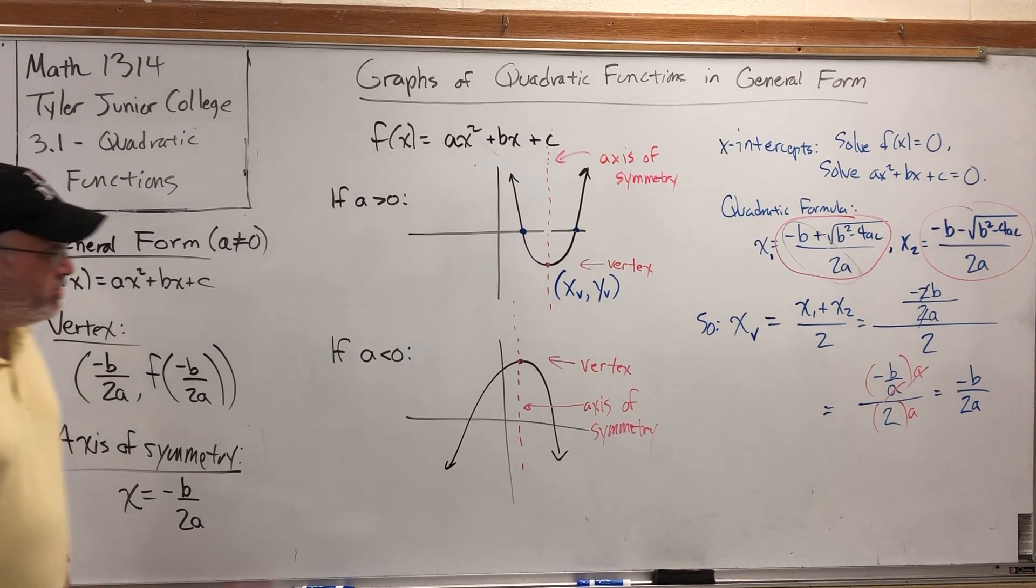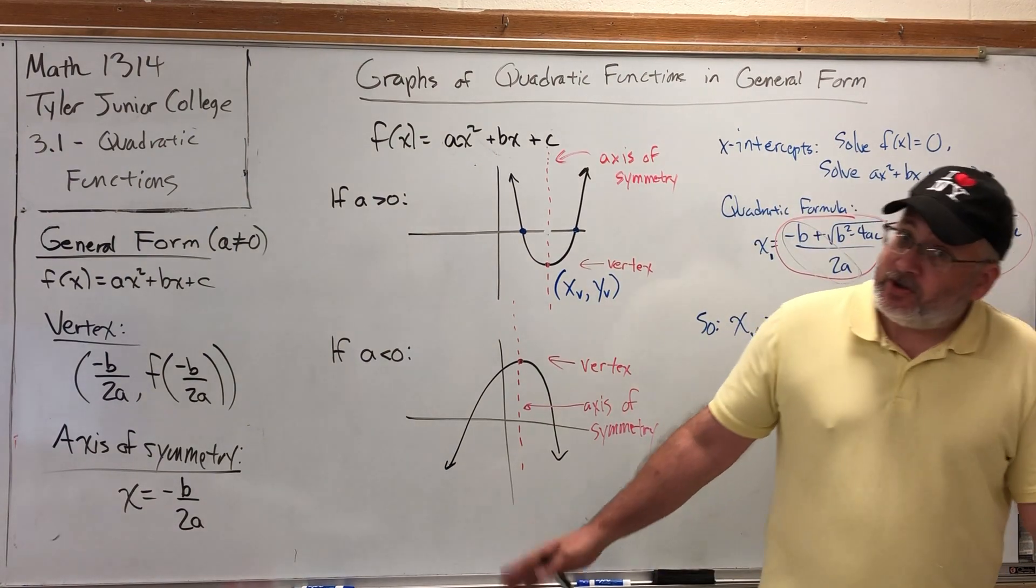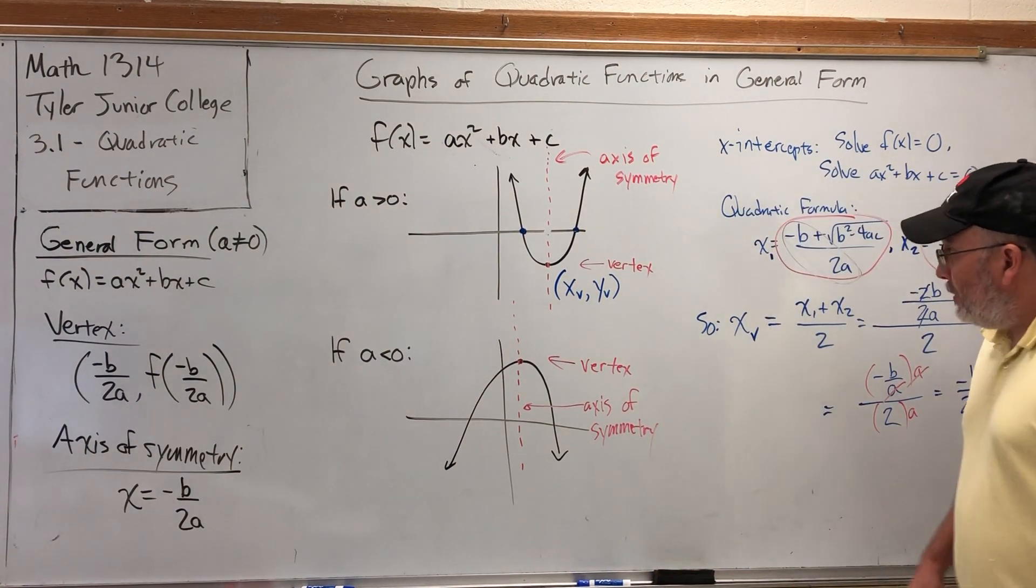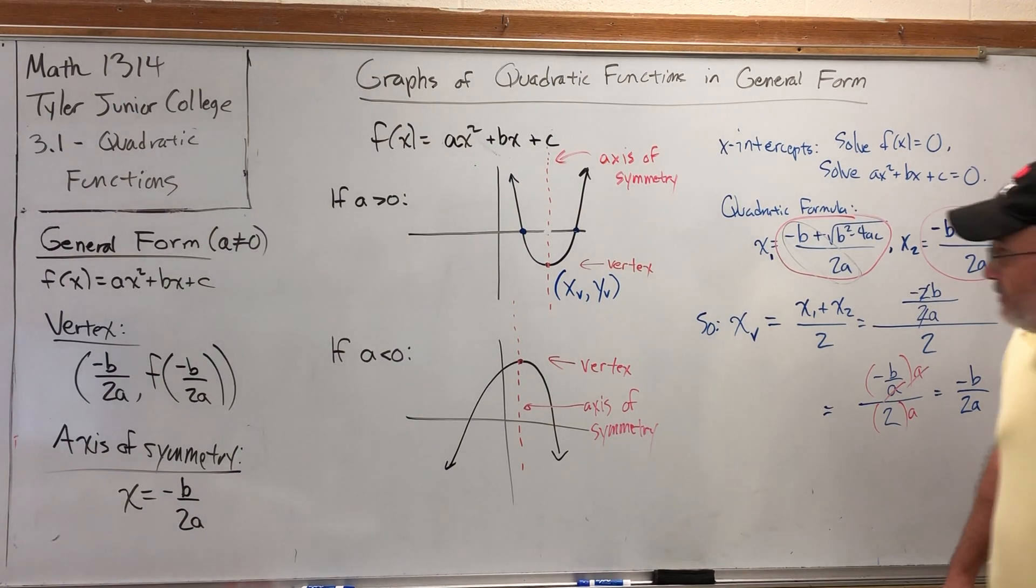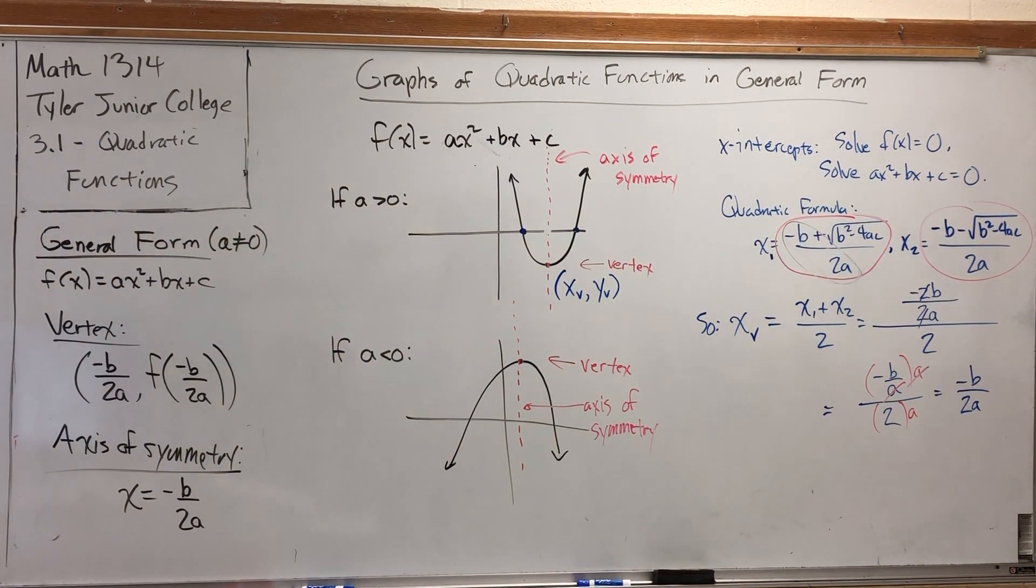That, coupled with the axis of symmetry, a plan for finding x-intercepts and y-intercepts, means we've got almost everything we need to graph parabolas in general form. In the next video, we'll take a look at a specific example of graphing a parabola in general form.